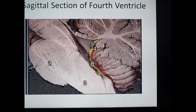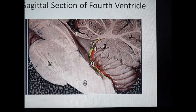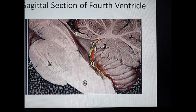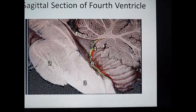This is a closer view showing the roof of the fourth ventricle in sagittal section. This is the cerebellum, this is the dorsal surface of the pons, and this is the medulla oblongata. The upper part of the roof is formed by the superior medullary velum made of white matter, separating from the lingula. The inferior medullary velum is formed by the ependyma and tela choroidea — the double-layered pia mater containing the choroid plexus.